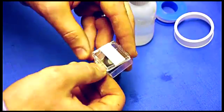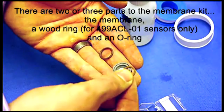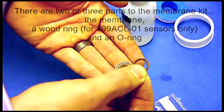Get a membrane kit and open it up. It'll have three distinct parts: the membrane head, a wood ring, and an O-ring.